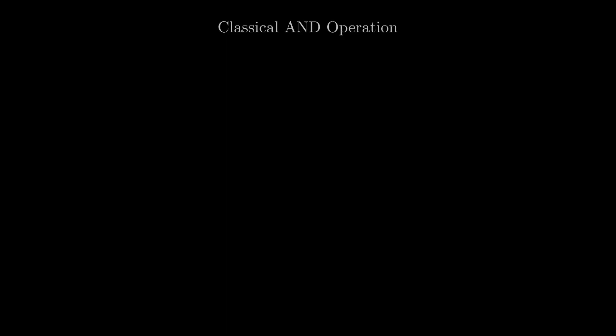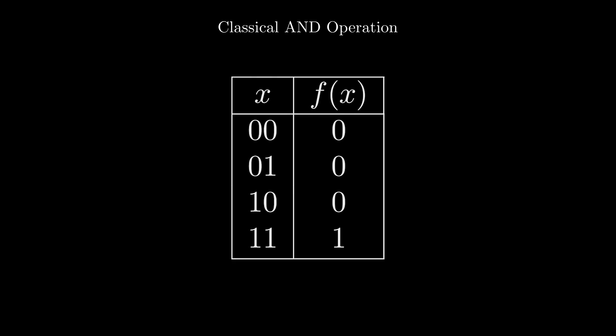Now let's look at the AND gate. Here is the truth table for the gate. The operation acts on two bits and returns 1 if the two bits are 1 and 0 otherwise.